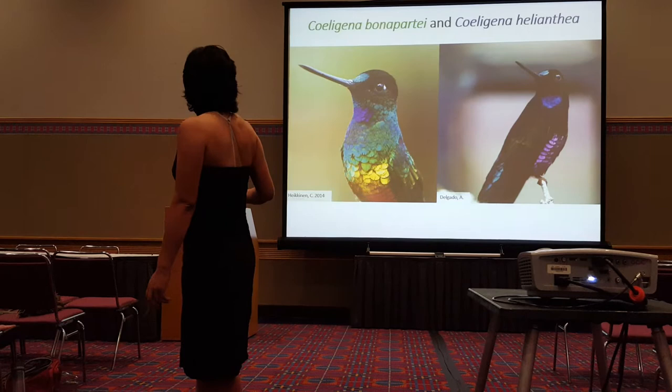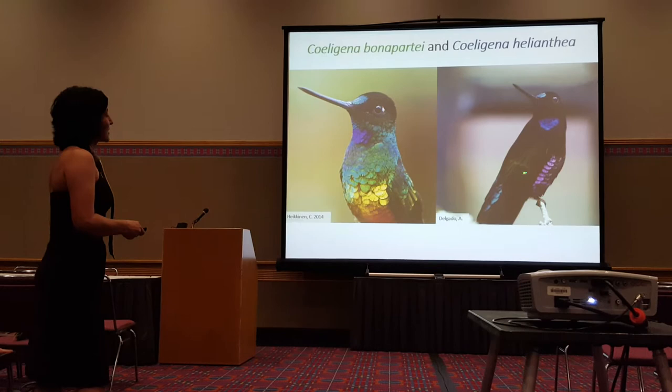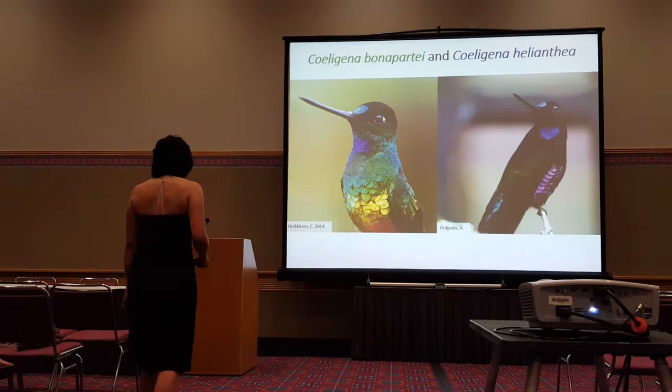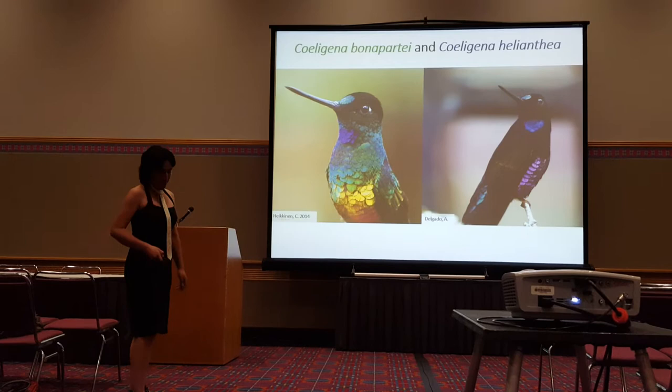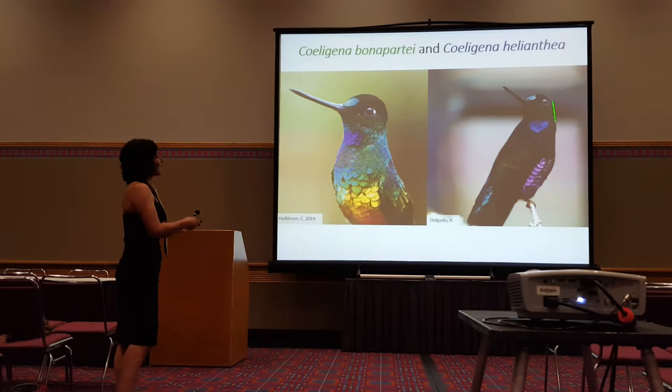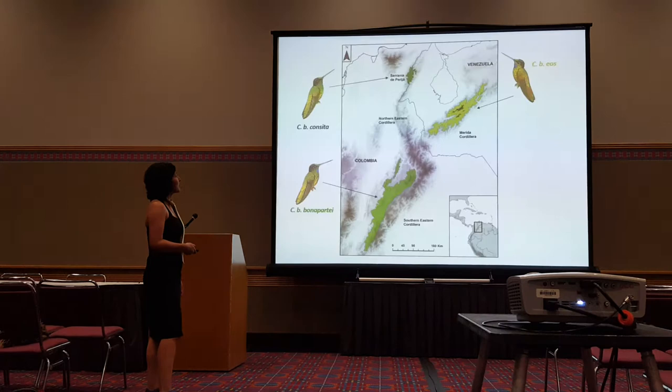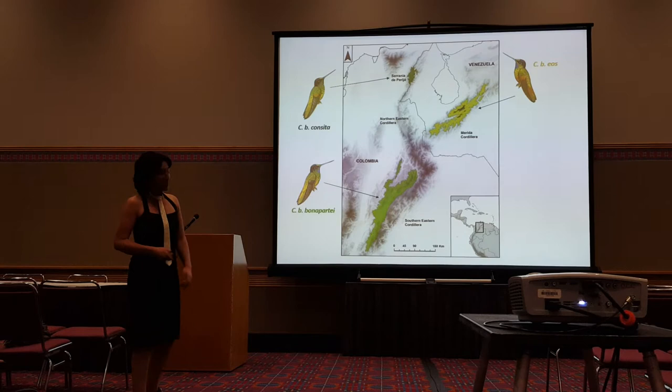The reason this was unexpected is that the species are very different. As you can see, the golden-bellied starfrontlet on the left has pretty much all the underparts golden, while the blue-throated starfrontlet has the belly rose and the rump aquamarine. This one is also darker than the other. From now on I'm going to call this complete species CB and this one CH.